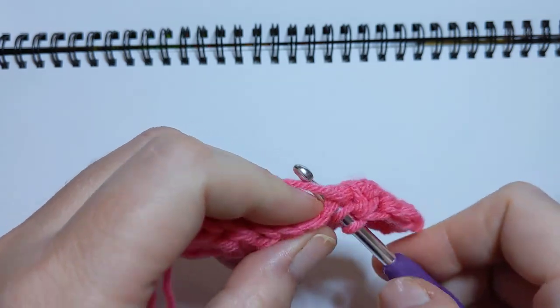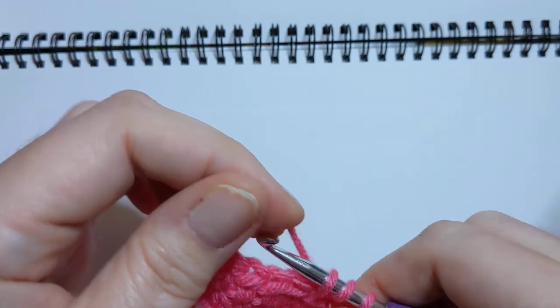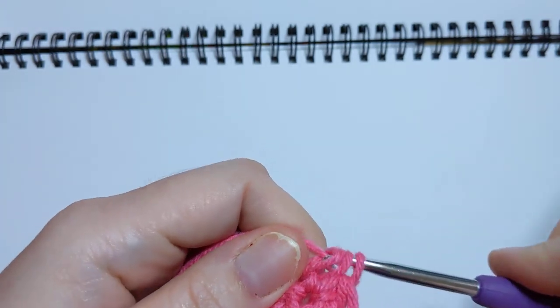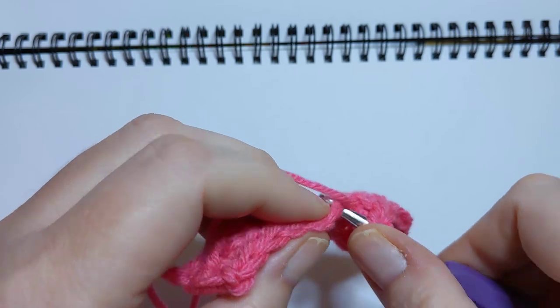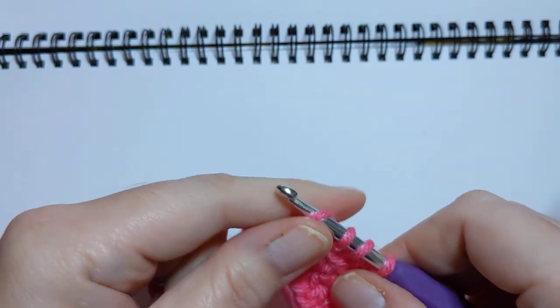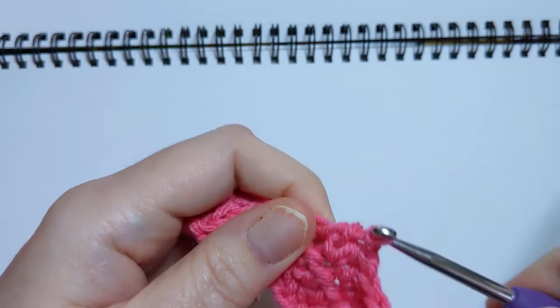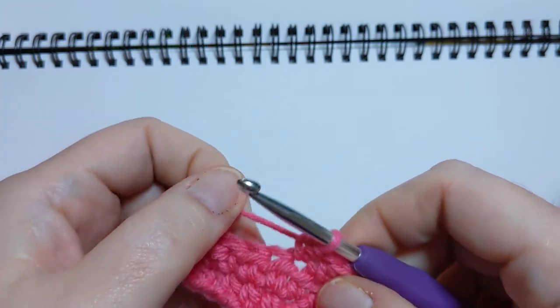We're going to do another regular old standard half double crochet. Okay, and another. And just for giggles, why don't we do another decrease? Okay.